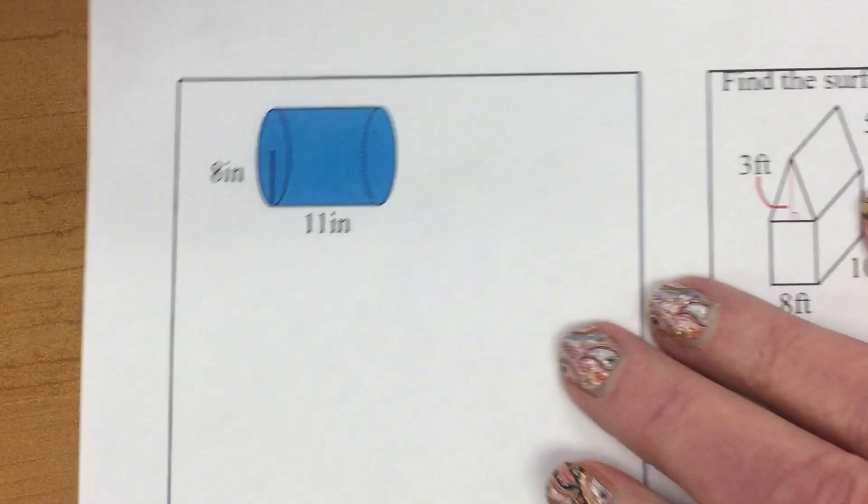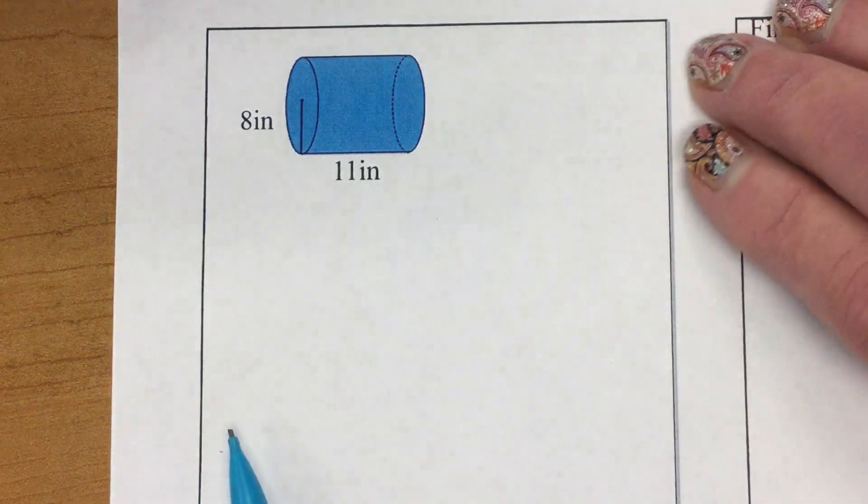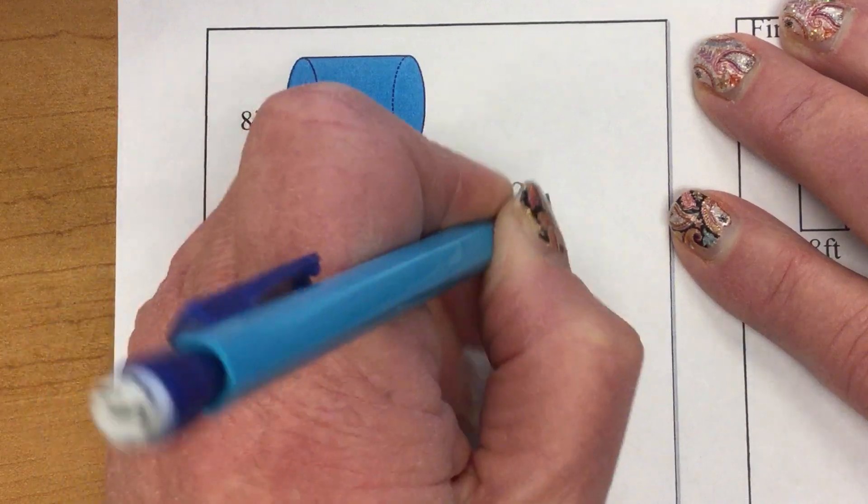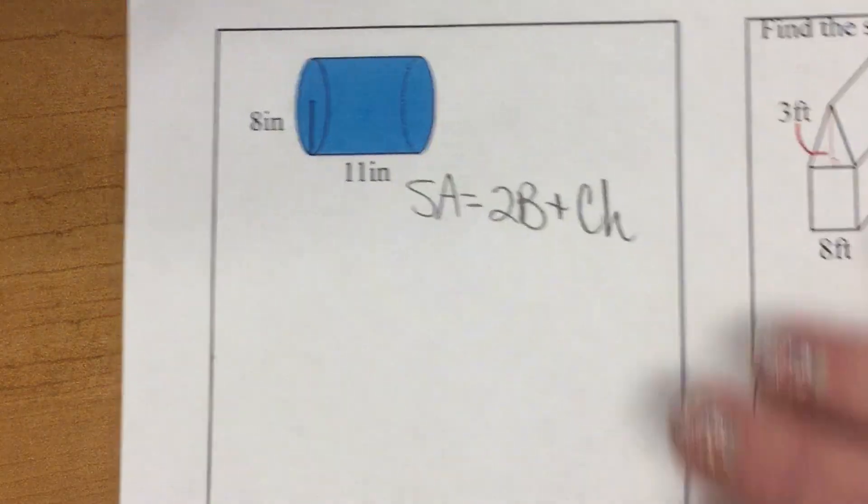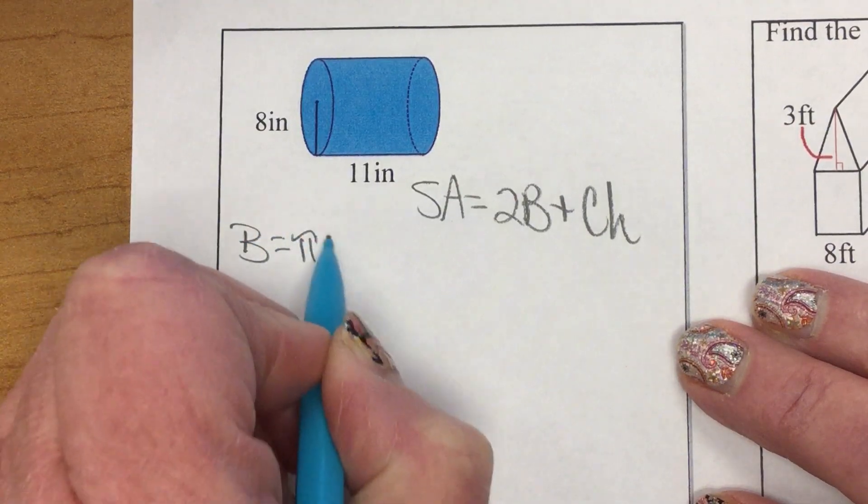Now, here we go. Are you ready? We have this lovely cylinder. It's laying on its side. That's okay. Surface area equals 2B plus CH.